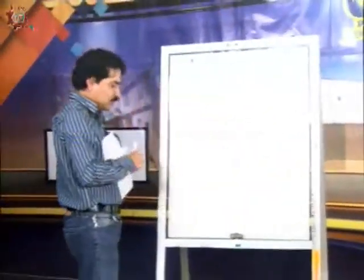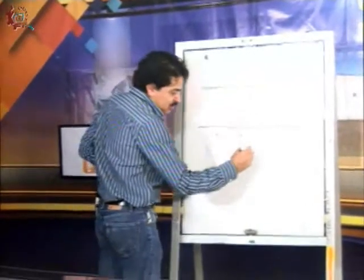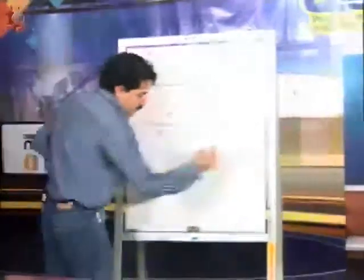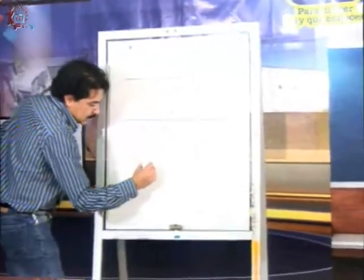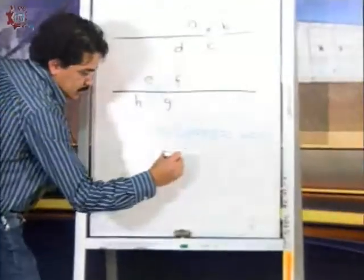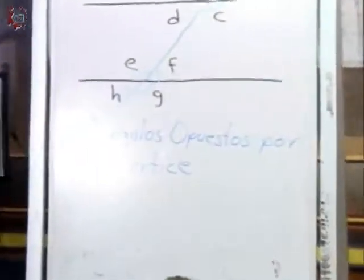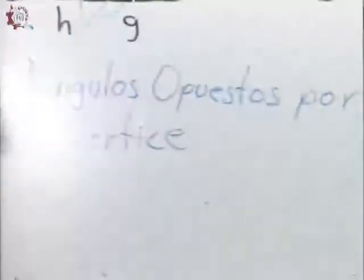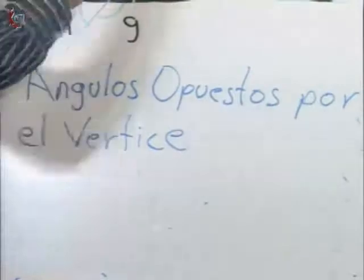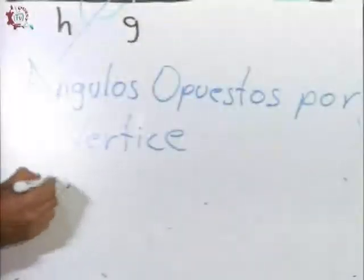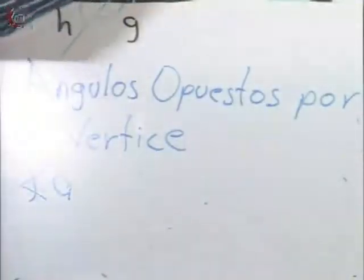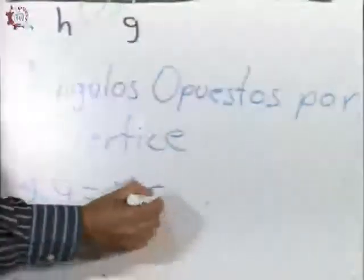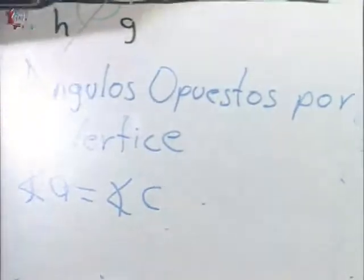Vamos a pasar a otro siguiente concepto que son los ángulos opuestos por el vértice. Los ángulos opuestos por el vértice también son equivalentes. En este caso, el ángulo A y el ángulo C son opuestos por el vértice.